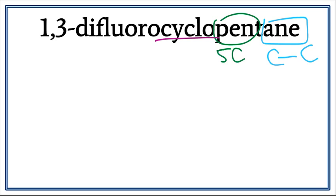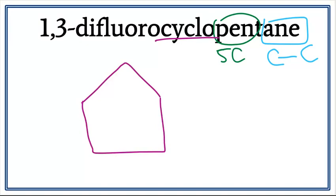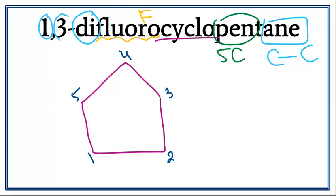Let's draw the pentagon. This is cyclopentane — we have five carbons in a ring. Let's number these carbons. We also have 'fluoro' attached, meaning that we have a fluorine attached to this cyclopentane. The '1,3-di' tells us that there are two fluorines attached — one on the first carbon and the other on the third carbon. So let's attach fluorine on the first carbon and on the third carbon.